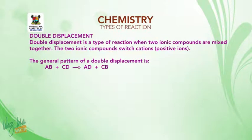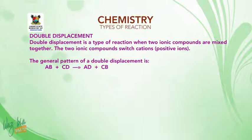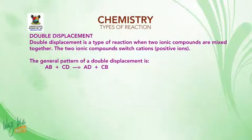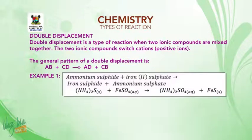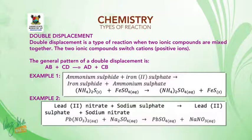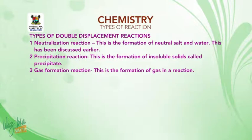Double displacement. This is a type of reaction when two ionic compounds are mixed together and the two ionic compounds switch cations (the positive ions). The general pattern is: AB + CD → AD + CB. For example, ammonium sulfide plus iron(II) sulfate gives iron sulfide plus ammonium sulfate. Another example: lead(II) nitrate plus sodium sulfate gives lead(II) sulfate and sodium nitrate. Different types of double displacement reaction include neutralization reaction, precipitation reaction, and gas formation reaction.